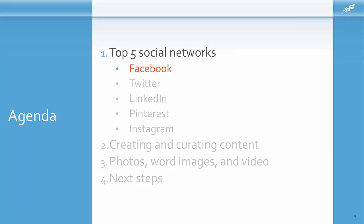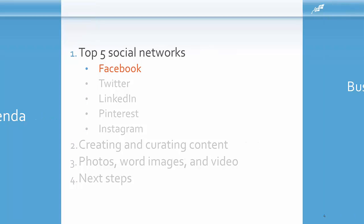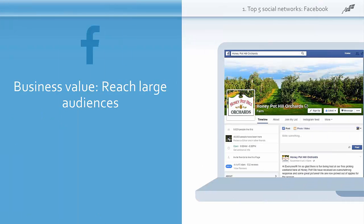Let's jump into a deeper look at the social networks, starting with Facebook. Facebook is the largest social media sharing site for people who use the internet and businesses who want to promote themselves online. This is the Facebook page for Honeypot Hill Orchards, a farm stand located in Stowe, Massachusetts. Because of that large audience, Facebook is the largest of all the social networks. It's been around since 2004 and there are over a billion users who check it multiple times during the day. Facebook is your best chance of all the social networks to reach a large group of people.